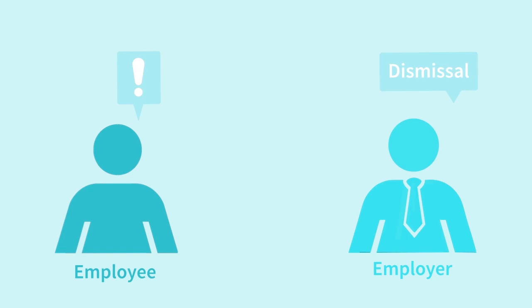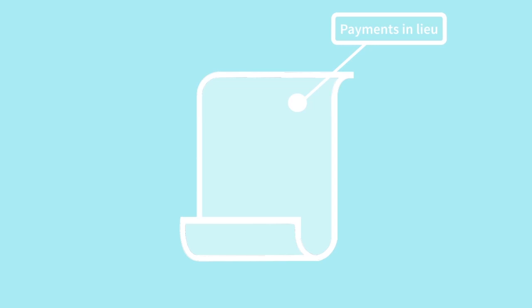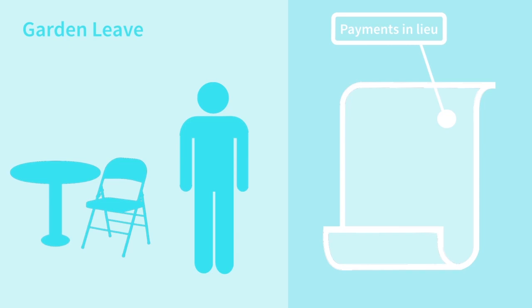Since most disputes between employers and employees arise on the termination of the relationship, it is often a good idea for the contract to specify the circumstances in which the employer will be entitled to terminate it without notice — for example, as a result of gross misconduct or gross negligence. Furthermore, many contracts give the employer the option of making a payment in lieu of notice and/or placing the employee on garden leave during any period of notice.